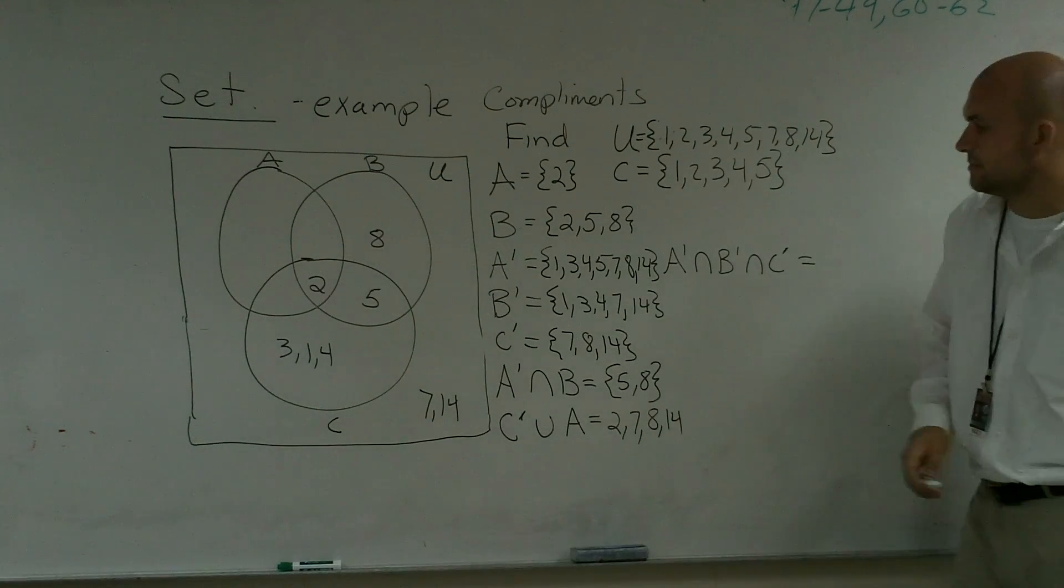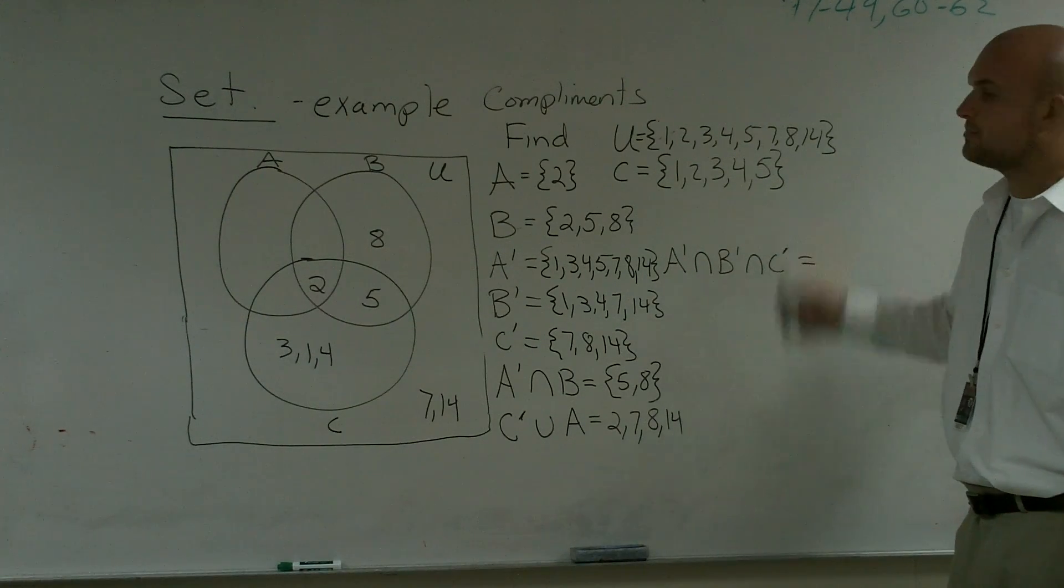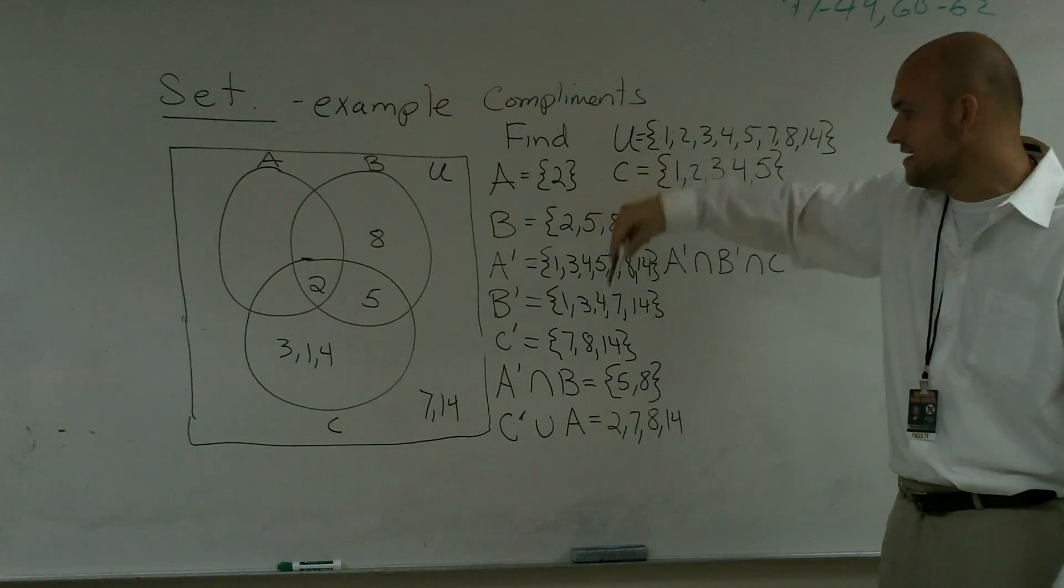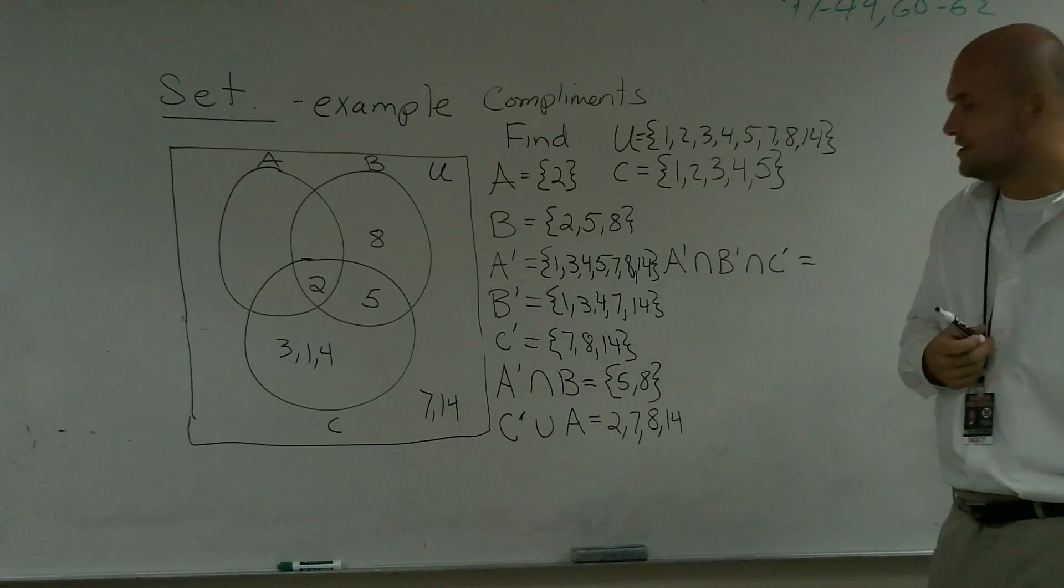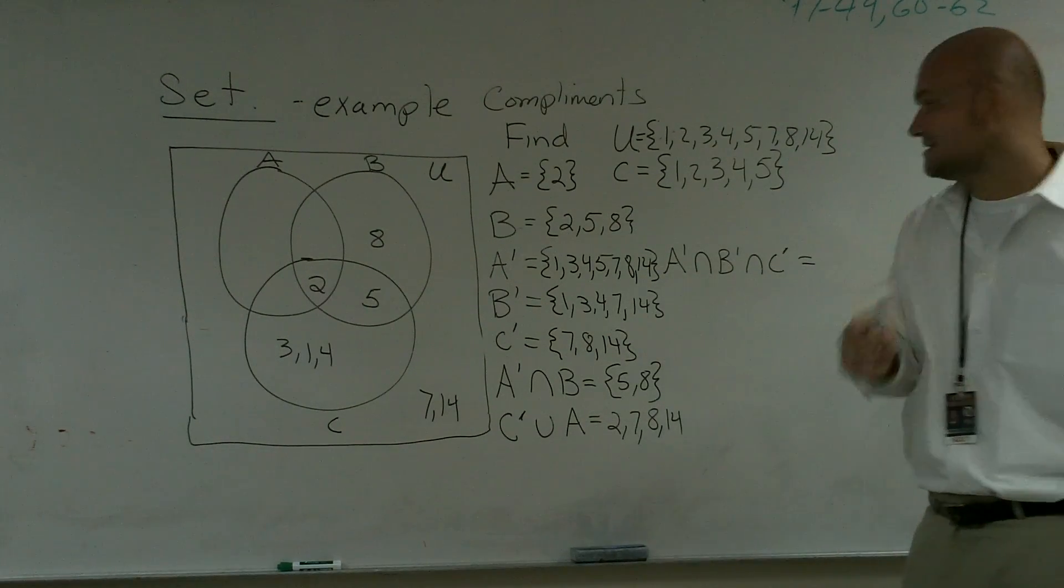All right, and then the last one I'm going to do for you is A prime intersect B prime intersect C prime. So everything that's not in A intersect everything that's not in B intersect everything that's not in C. So what are the only two elements that they all three have in common? There's two elements.